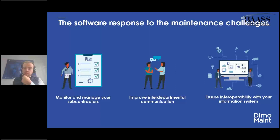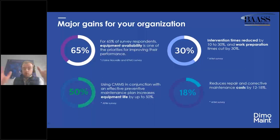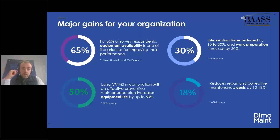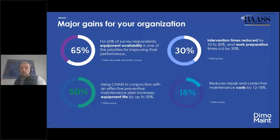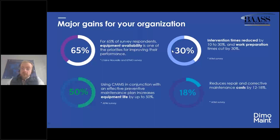You can also ensure interoperability, for example with Sage X3 — I'll go deeper into that afterwards. Some of the major gains a CMMS brings to a manufacturing organization: first is better equipment availability. With better maintenance you have better availability of your operation assets. Also a better equipment life — we think it can be increased up to 250%. It also reduces intervention time and work preparation for the maintenance team, and reduces corrective works — meaning less failures, less corrective maintenance, and ultimately less cost.